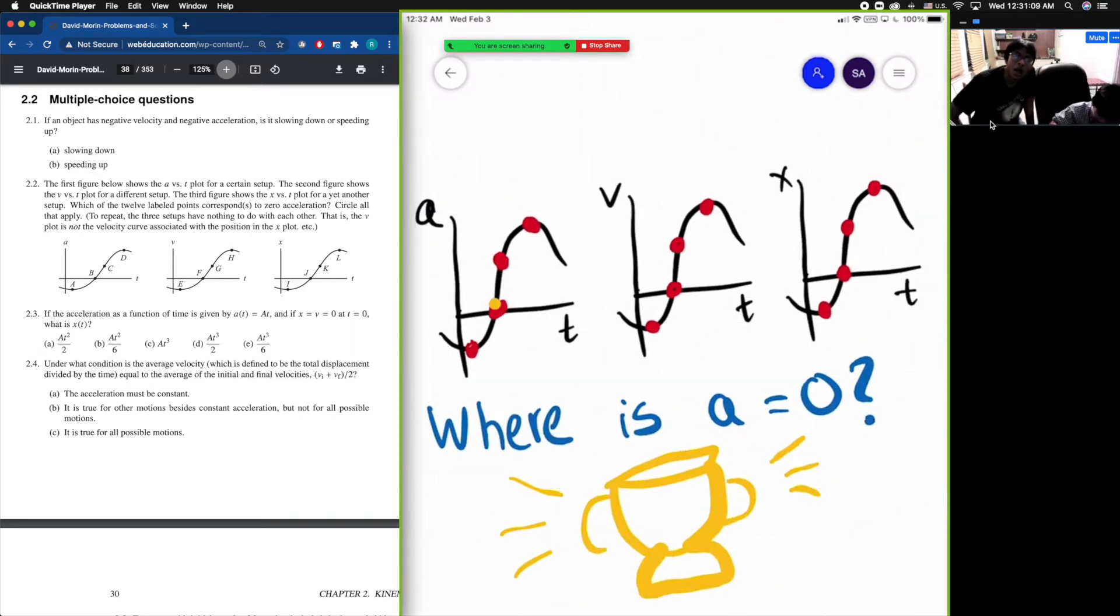You see this point, right? Well, A is the Y axis, right? And here is Y equals zero, right? So therefore, here is also A equals zero. So that means that yellow point is one of the points where acceleration is zero.